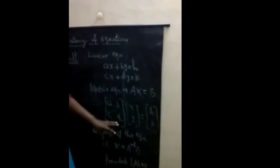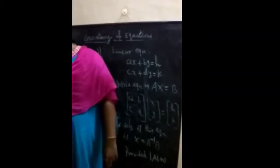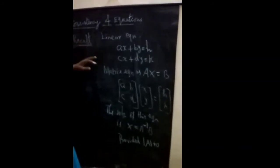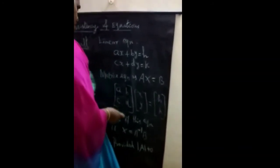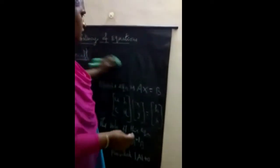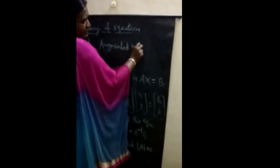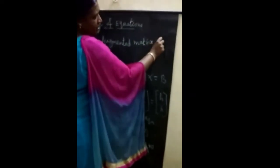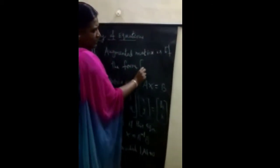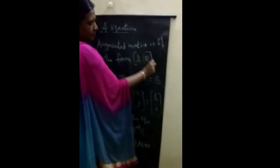This is what you learned at the standard level. Now, to find consistency, we need to find the rank first. Before that, one more thing to recall — the augmented matrix. The augmented matrix of the equation AX equal to B is written as [A|B].